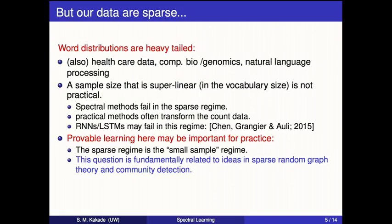The key is we'd like to do estimation with a sample size that grows linearly in the vocabulary size. If I really need a very dense matrix for an algorithm to work, it's just not going to be applicable in healthcare settings and NLP settings for rare words. So I'm going to go through a toy example to show how we can connect ideas in graph theory to these hidden structure models.